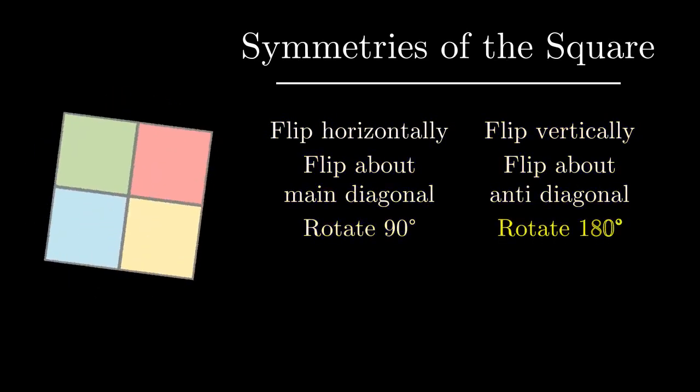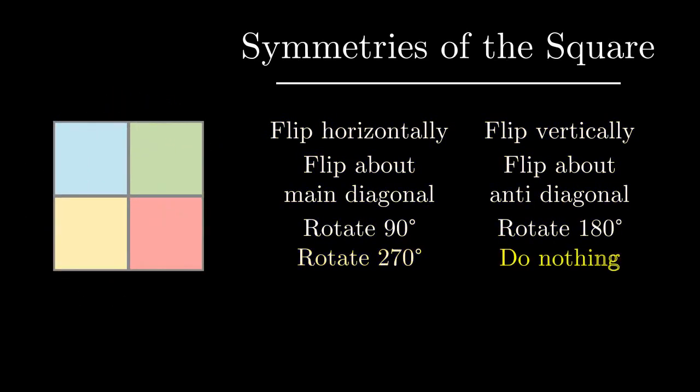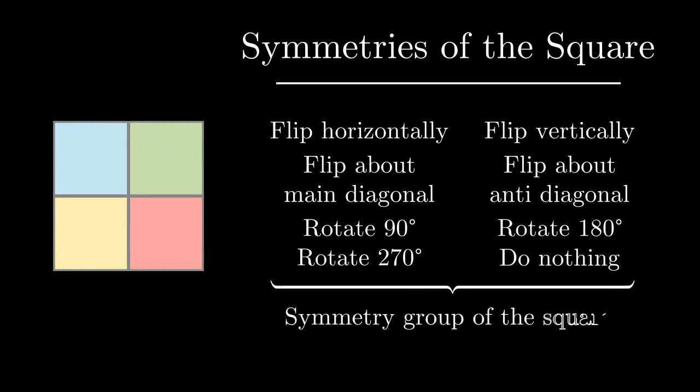We can rotate by 90, 180, or 270 degrees. We can also do nothing. These 8 transformations represent everything you can do to the square and still have it look the same, so they form its symmetry group.